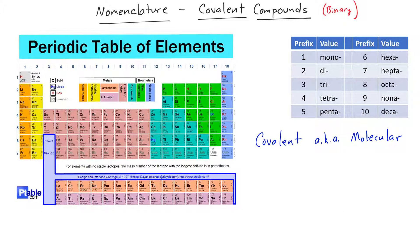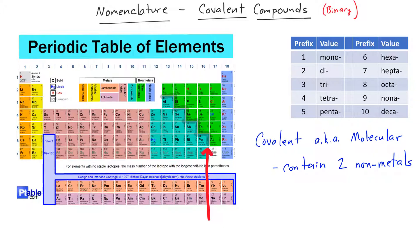To identify a covalent compound, also known as a molecular compound, you want to look for compounds that contain two nonmetals. You can determine whether your elements are metals or not by looking at where they are on the periodic table. There is a line that indicates the barrier between metals and nonmetals. All the elements to the right of this line are nonmetals; all the elements to the left, except for hydrogen, are metals. Hydrogen, even though it's located to the left of the line, is still a nonmetal.